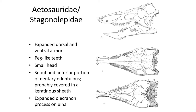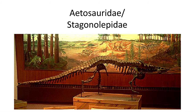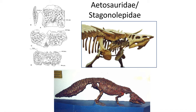The final group of Triassic Crurotarsians are the heavily armored Aetosauridae, or Stagonolepidae. They have a narrow skull that somewhat resembles an armadillo, with expanded dorsal and ventral armor, peg-like teeth with the anterior portion of the dentary edentulous — possibly covered in a keratinous sheath — and an expanded olecranon process on the ulna that would be useful for digging. These animals may have been able to roll their bodies into balls to protect themselves from larger carnivorous animals living at the time. Osteoderms of aetosaurs are commonly found in late Triassic rock units, and only a handful of complete skeletons are known.